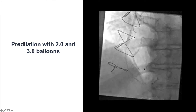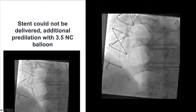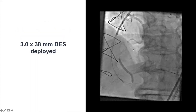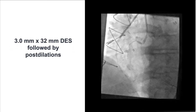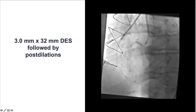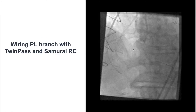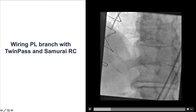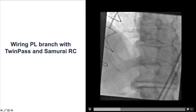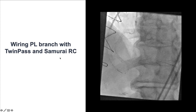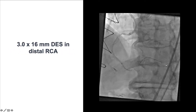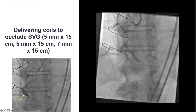We performed extensive balloon predilatation and had significant difficulty delivering stents. Additional predilatation and guide extension were used. Eventually we were able to deploy a drug-eluting stent, overlapped with another more proximally, and another in the proximal right coronary artery, followed by multiple balloon post-dilations. We had a bifurcation on the distal cap, so we used a Twin Pass and a Samurai RC to advance a guide wire to the posterior lateral branch, then placed an additional drug-eluting stent in the distal right coronary artery.